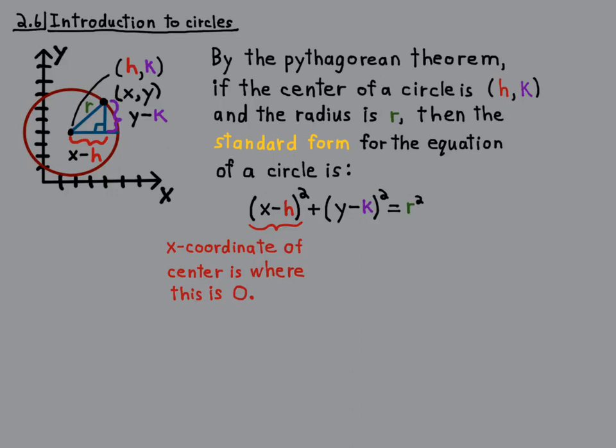You do the same thing with the y-coordinate here. The y-coordinate of the center is where this quantity is zero. So you take y minus k, set it equal to zero, you get y equals k. Now you might say, why don't I just remember that it's the opposite of the sign of whatever number comes after the x and the opposite of the sign after y. Well, because there's some situations where it's not, and people get it confused, especially with the parabola. That's the infamous one where people start getting confused.